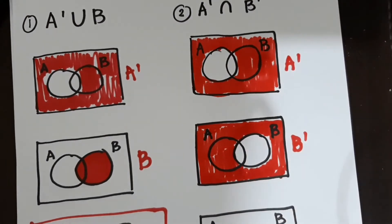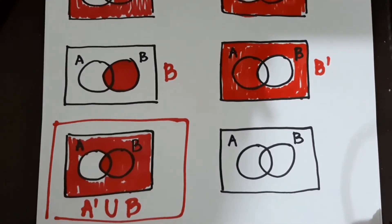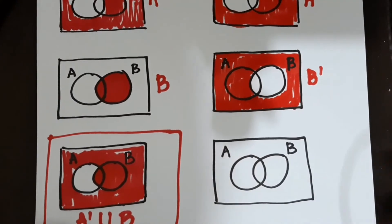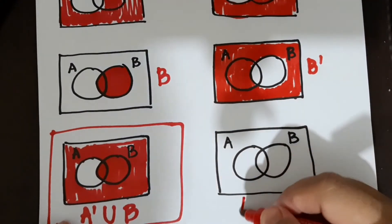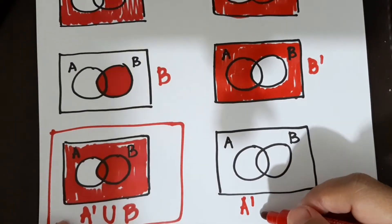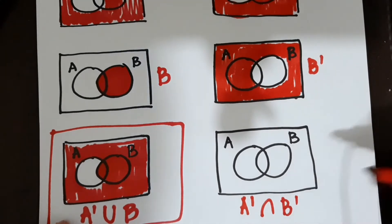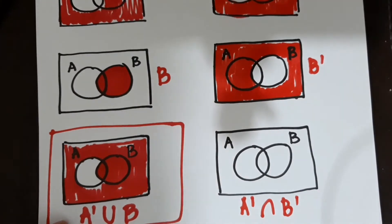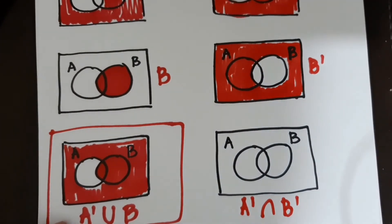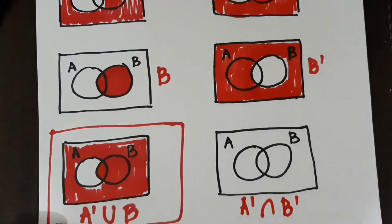So medyo nakakaubos ang tinta ng marker. Okay, next. Ang ating final ay not A intersection not B. So therefore, intersection siya. Kukunin natin yung common o parehas na na-shade-an.